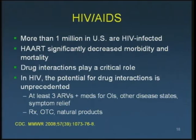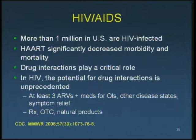HIV/AIDS affects more than 1 million individuals in the US and nearly 40 million worldwide. Highly active antiretroviral therapy has significantly decreased morbidity and mortality. Drug interactions play a critical role, as many patients are on at least three HIV medications, plus additional medications for opportunistic infection prophylaxis, comorbidities like hypertension, hyperlipidemia, and diabetes, and symptomatic relief from antiretroviral side effects. Many patients also take over-the-counter drugs and herbal products they may not report, viewing them as safe because they're available without a prescription.